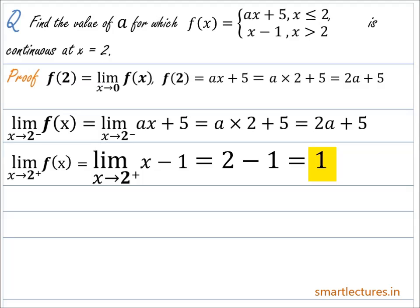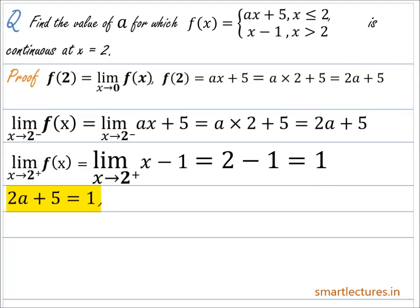For the given function to be continuous at x = 2, the left-hand limit, right-hand limit, and the value of the function f(2) must all be equal. So 2a + 5 must equal 1, giving 2a = -4, or a = -2.